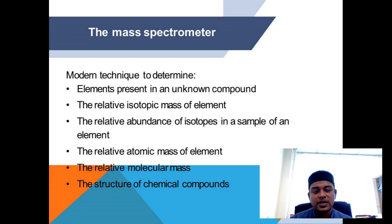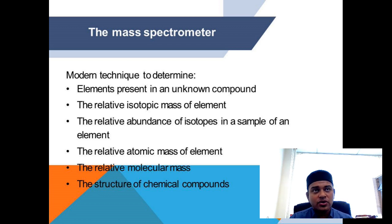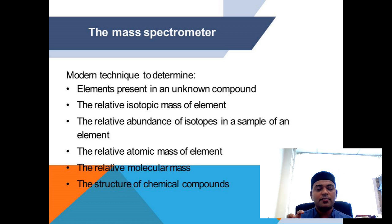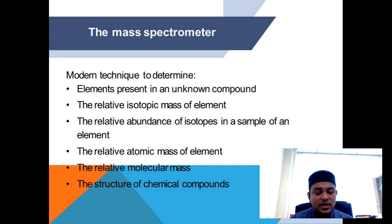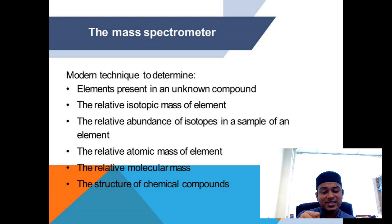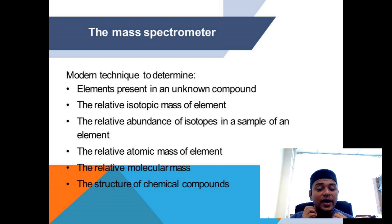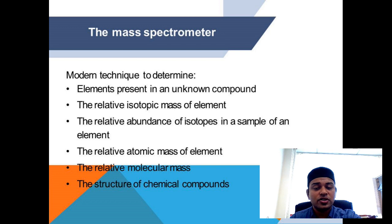The uses of the mass spectrometer: it is used to identify the mass of an unknown atom or element. Other than that, we can determine the relative abundance — meaning how many isotopes of an atom exist under normal conditions. We can also determine the relative molar mass; when it is just one atom it is relative atomic mass, and when you have a combination of atoms it becomes relative molecular mass.